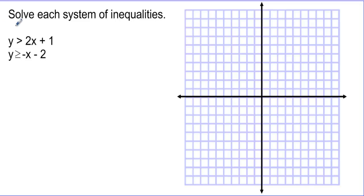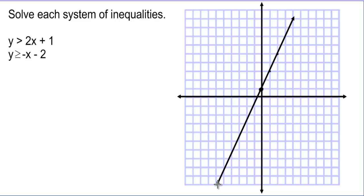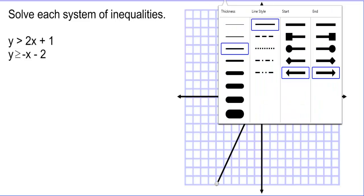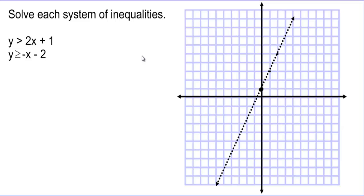Solve each system of inequalities. The first line has a y-intercept of 1 with a slope of 2 — up 2 over 1, up 2 over 1. Using the line tool, we draw this. We want this line to be dotted because the inequality is strictly greater than, not equal to — the equal part would be on the line.